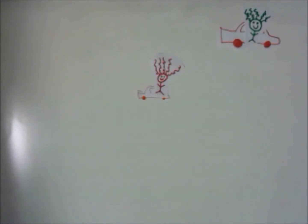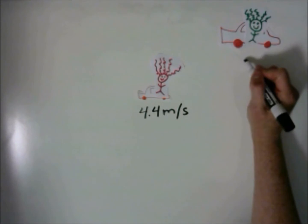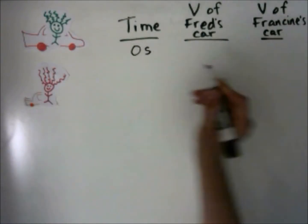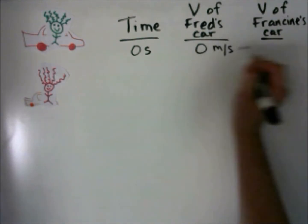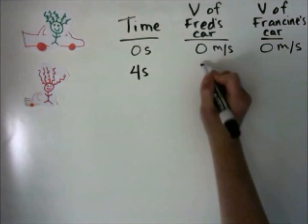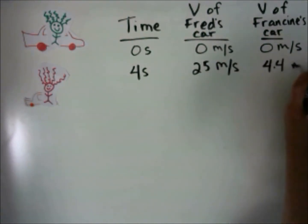After 4 seconds, Francine's car is going 4.4 meters per second. Fred's car is going 25 meters per second. So whose car has greater acceleration? At 0 seconds, both cars were moving 0 meters per second. After 4 seconds, Fred's car was moving 25 meters per second and Francine's was moving 4.4 meters per second.